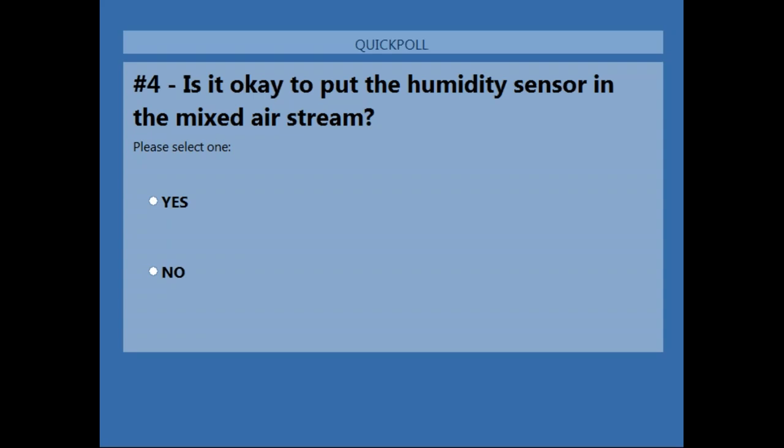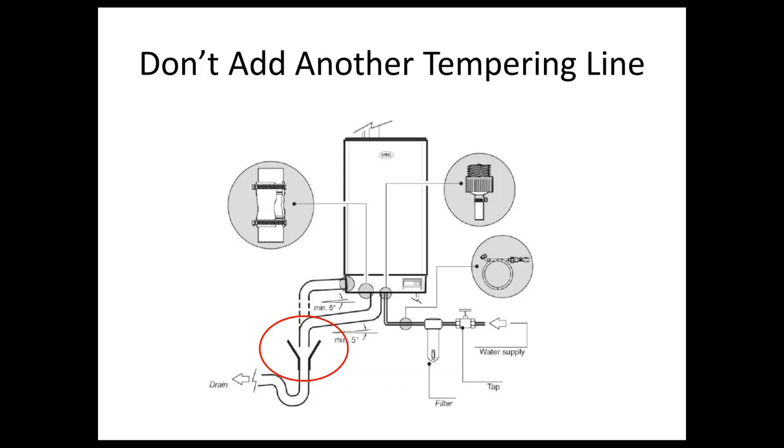Clarification on quiz question three: several people noted that if using a hose there are no elbows, so answers A — 20 feet — and B — 20 equivalent feet — are both correct. When using rubber hose, you want gradual bends rather than tight 90s. It is always 20 equivalent feet as the limit. For the PDH answer key, both A and B will be accepted as correct. Quiz question four: Is it okay to put the sensor in the mixed air stream? 79% answered no — correct.